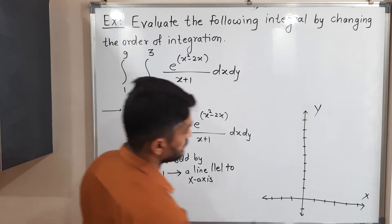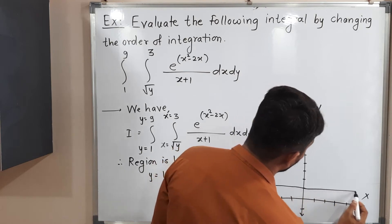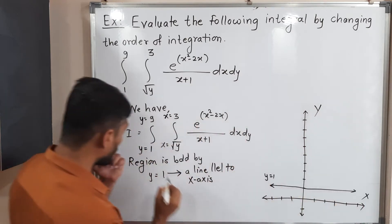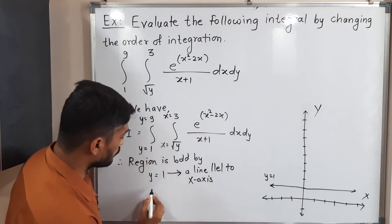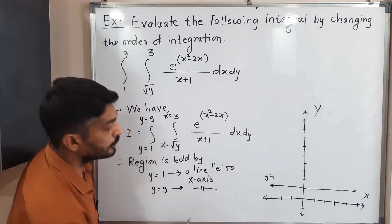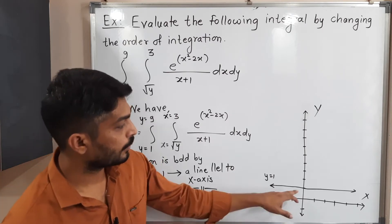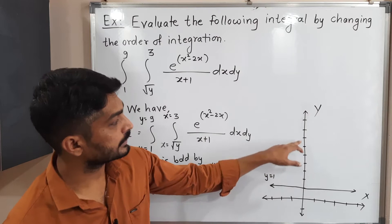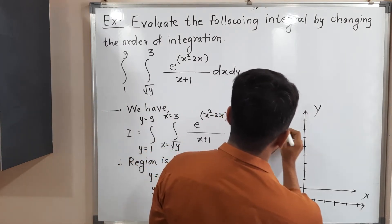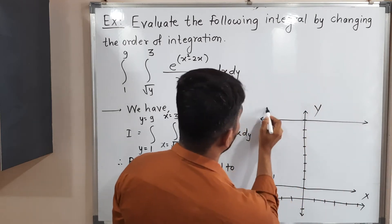A line parallel to the x-axis passes through y equals one, so we have that line drawn here. Next, y equals nine — this is again a line parallel to the x-axis which passes through y equals nine. Let us draw this line at y equals nine.